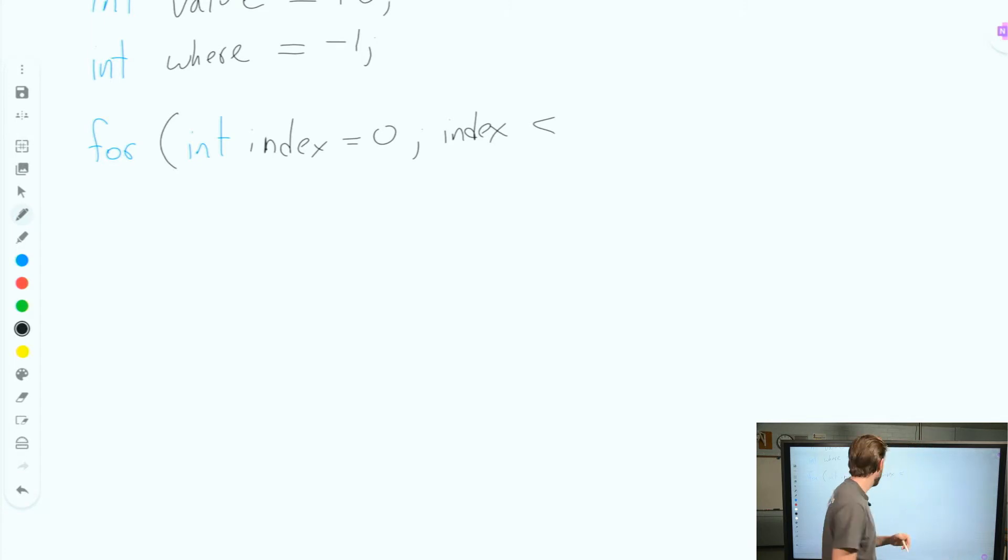And as long as our index is less than, and this is the cool thing about arrays, array dot length. So just like a string, it's going to be less than our length except no parentheses after length.